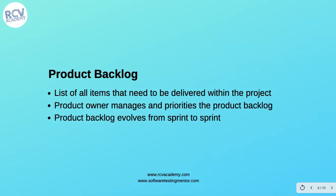The next thing is the product backlog. The product backlog is a list of items or requirements that need to be delivered within the project. For example, if you have a project of six months or one year, you define the product backlog based on the end goal. The product backlog is basically the set of user stories and epics that define the requirements for the whole product. The product owner manages and prioritizes the product backlog.